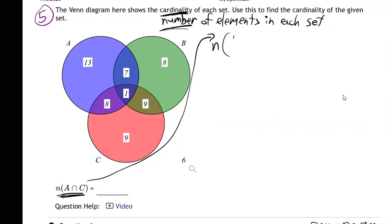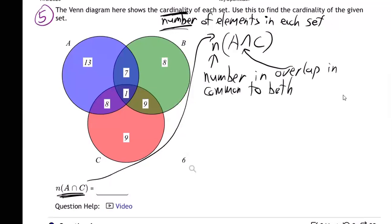It's n(A ∩ C), so that means the number. This question is all about the number in what? The overlap, because that's the U turn over - overlap, in common to both A and C. Right, that's what that means - the number in the overlap in common to both A and C.